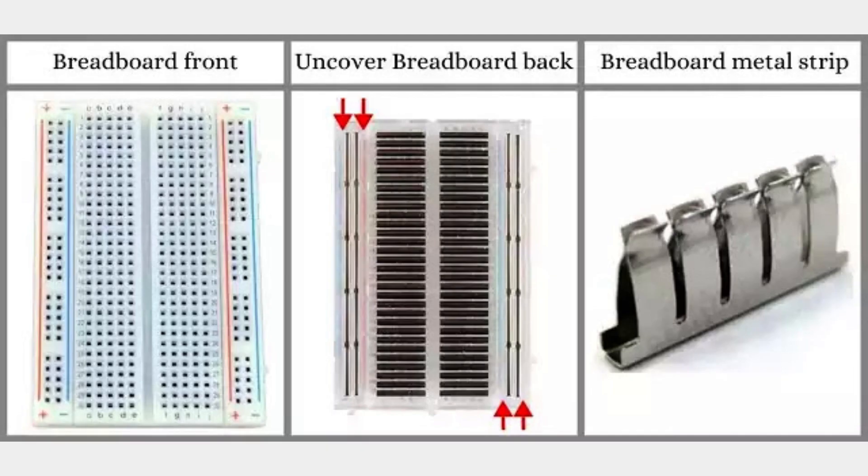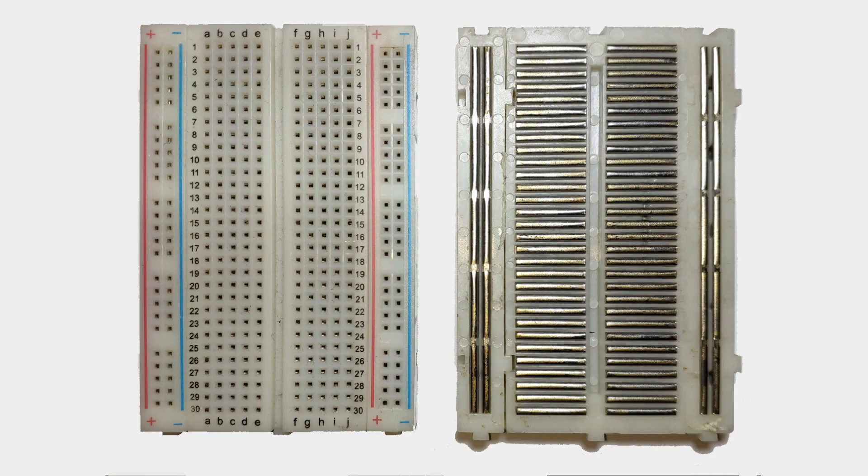Typically, a breadboard consists of a flat plastic board with a grid of interconnected metal strips. These strips are arranged in rows and columns, with each hole in the board connected to others in the same row or column. The rows are usually labeled with numbers, while the columns are labeled with letters, forming a reference grid.